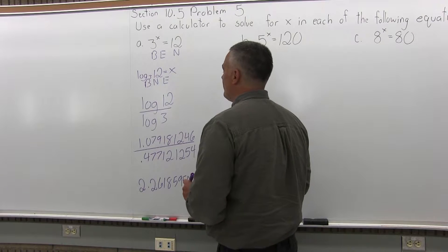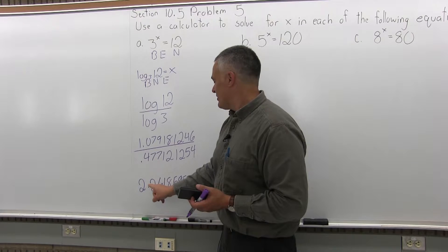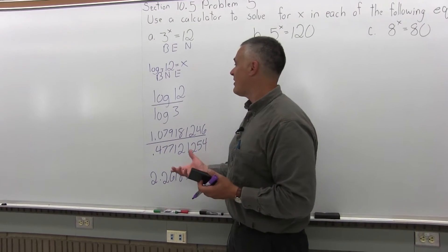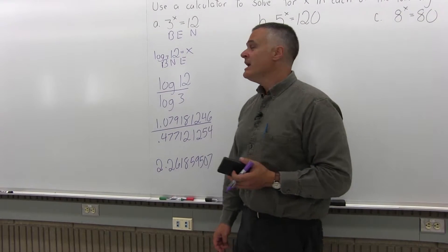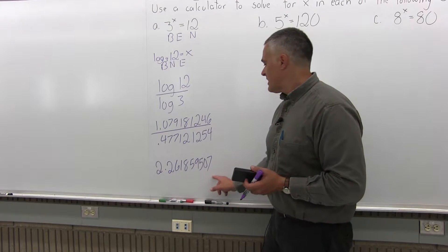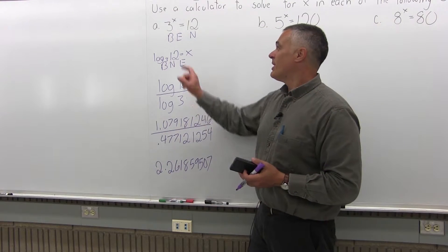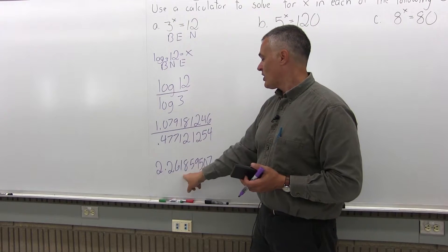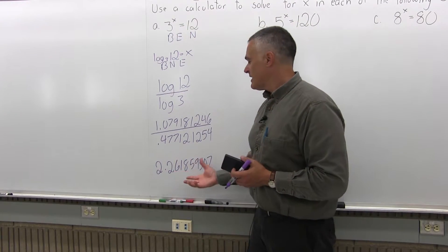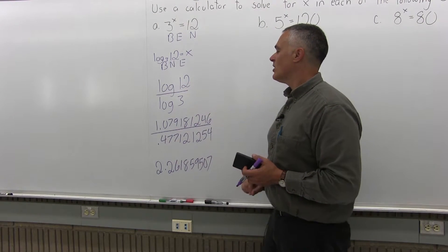So what we found out is 3 to the 2.261859507 power is going to equal 12. And this is the type of problem that you can verify with your calculator. While that number is on the screen of your calculator, if you like store it in memory, and then with your exponent button, put 3 exponent recall memory equals, and it will tell you that it's 12. So you found the exponent. It's a very difficult exponent to find if you don't use logs. That's why we learn about logs.